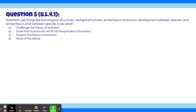Question 5. Scientists use things like homologous structures, vestigial structures, similarities in embryonic development between species, and similarities in DNA between species to do what?